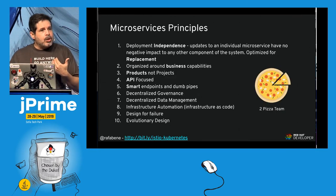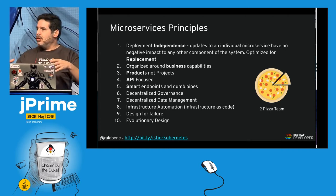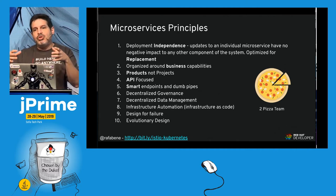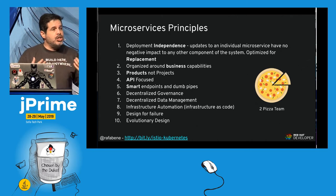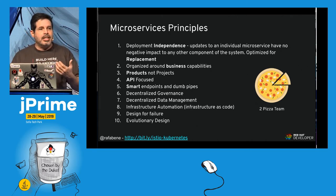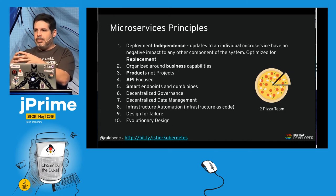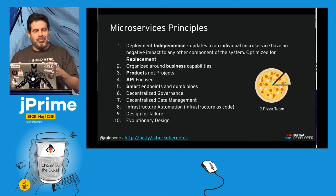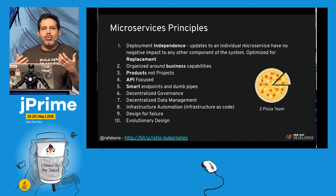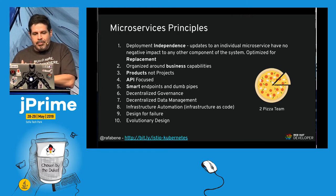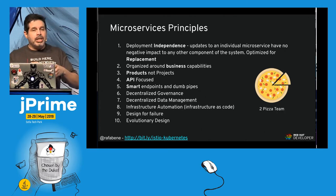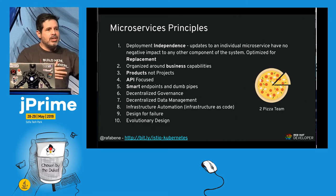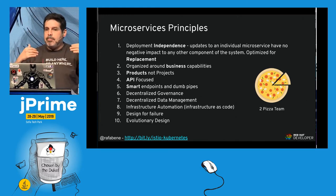Let's recap some microservice principles. If we decided to implement microservices with everyone, we would divide into teams to achieve agility. We achieve agility through deployment independence. Teams should be small — the famous 'two-pizza team.' Those teams produce microservices independently, and we cannot wait for other teams. Each microservice must be independently deployable.